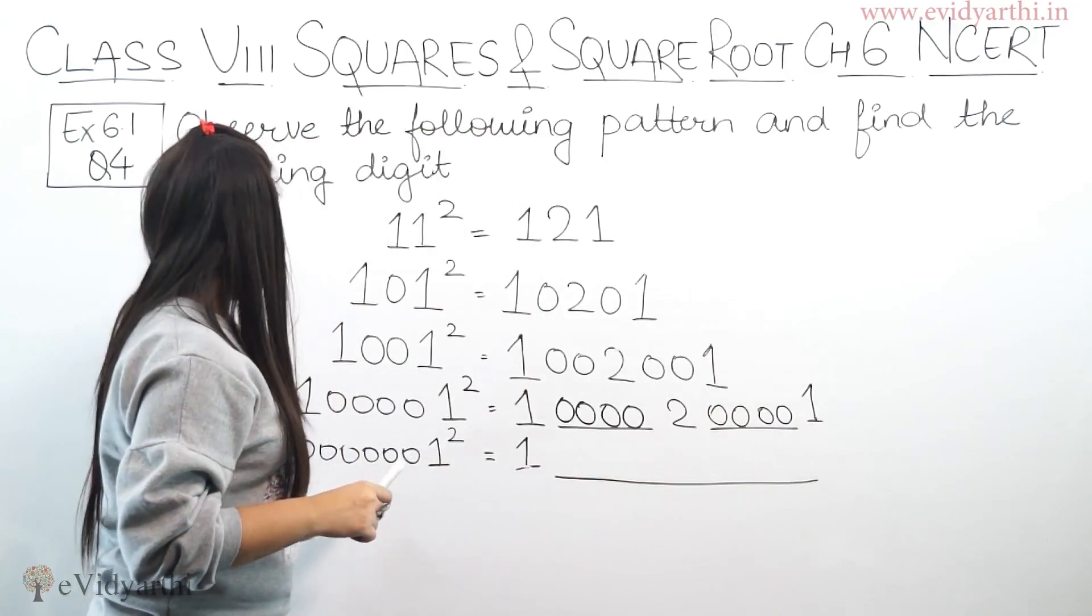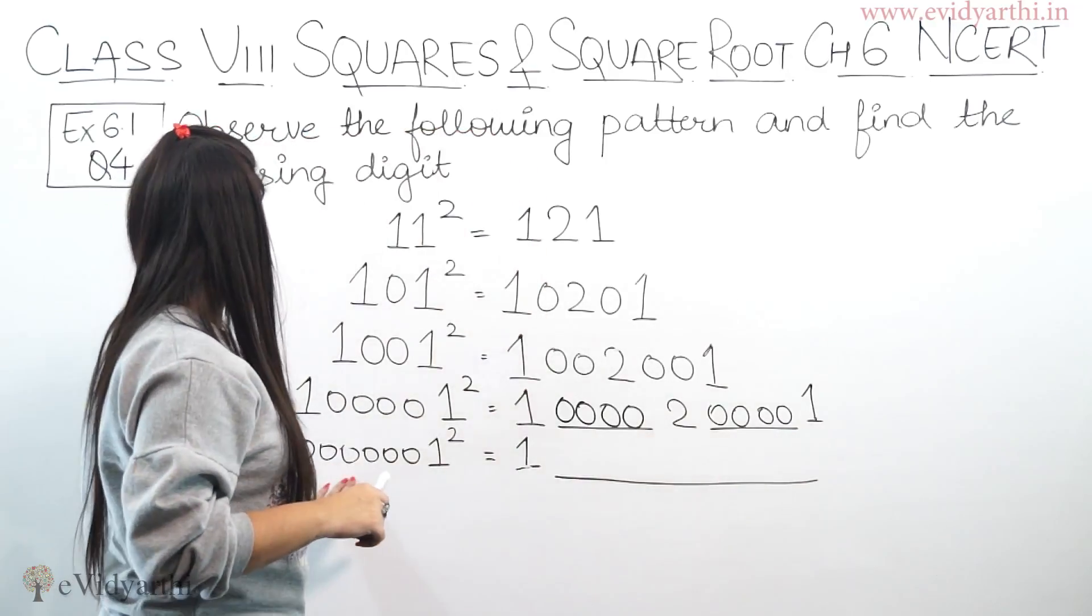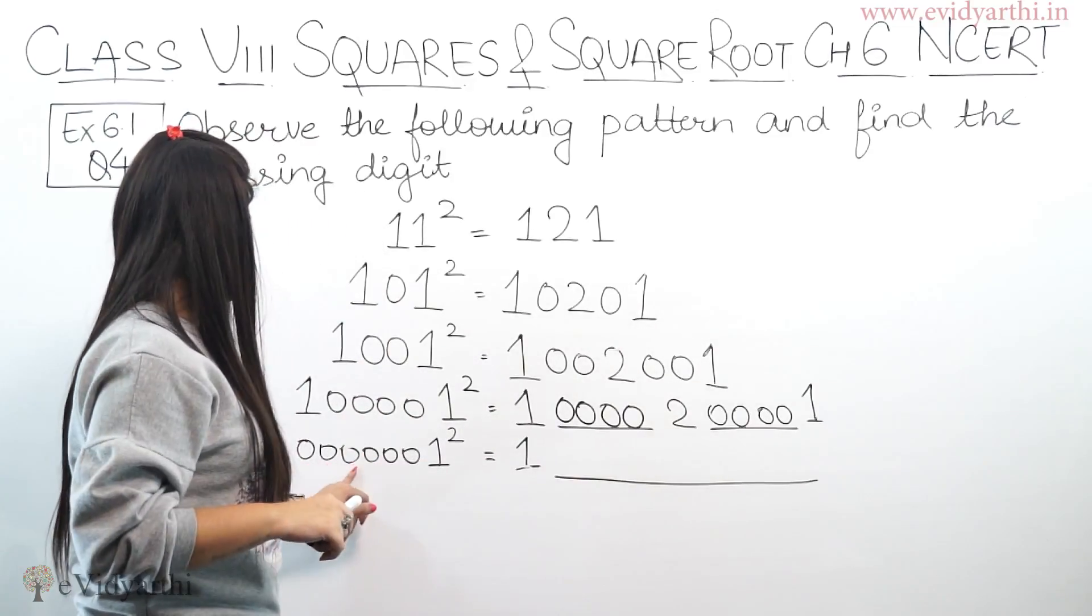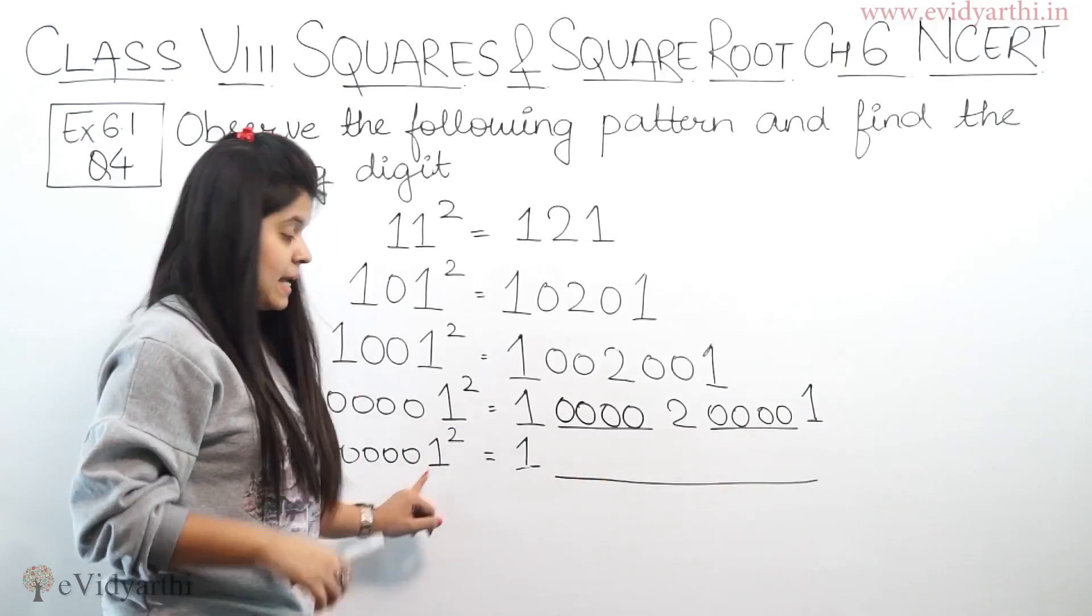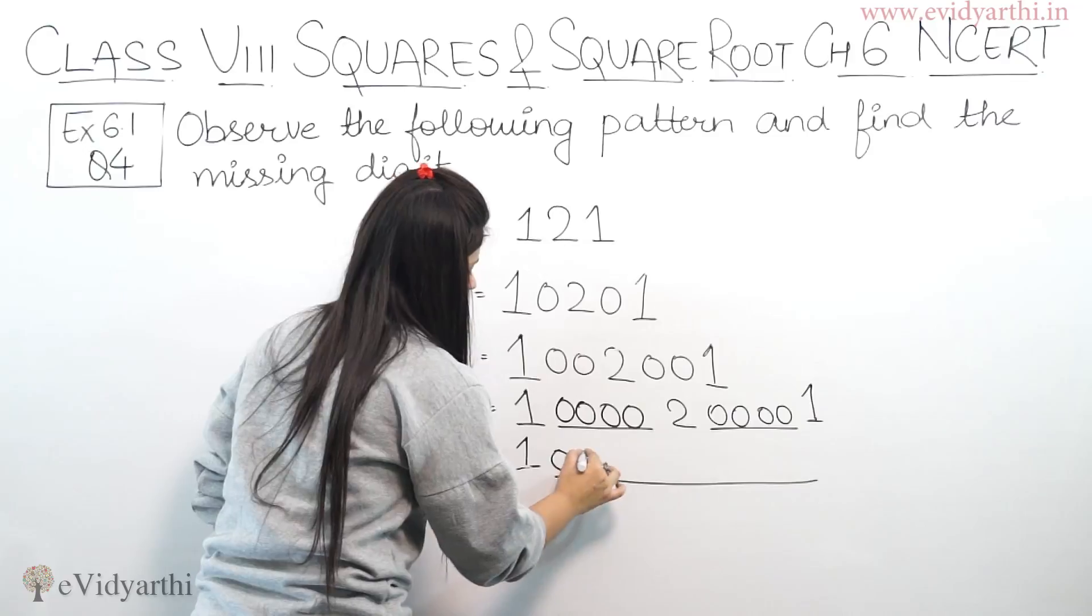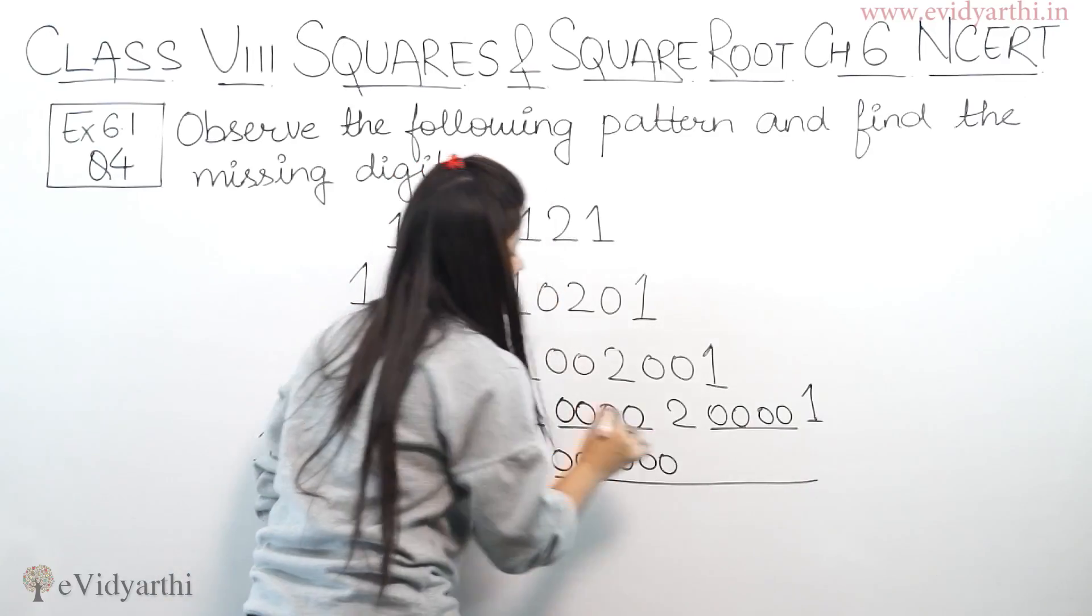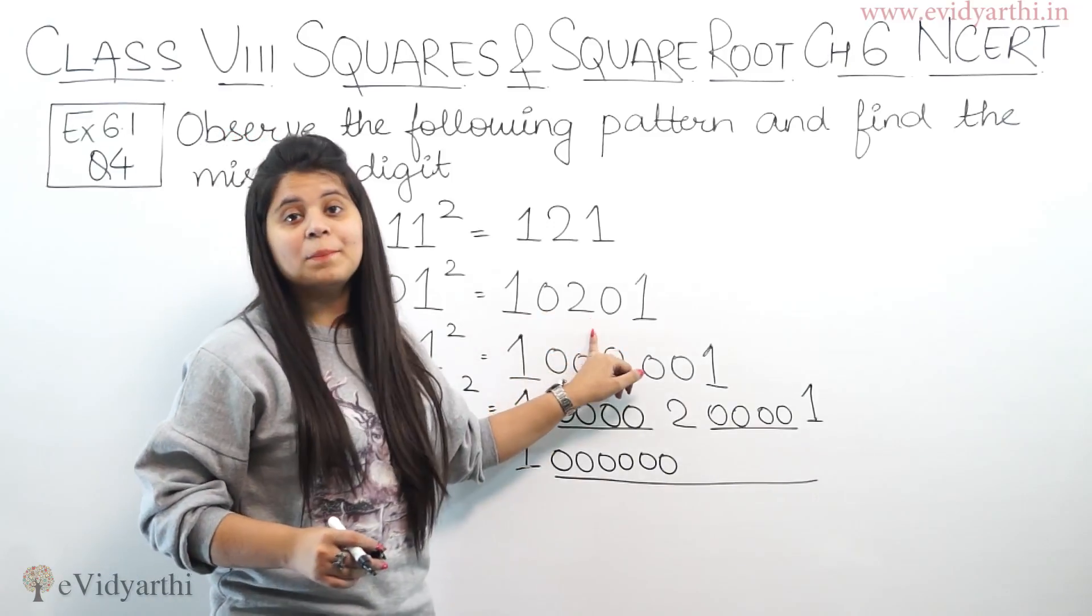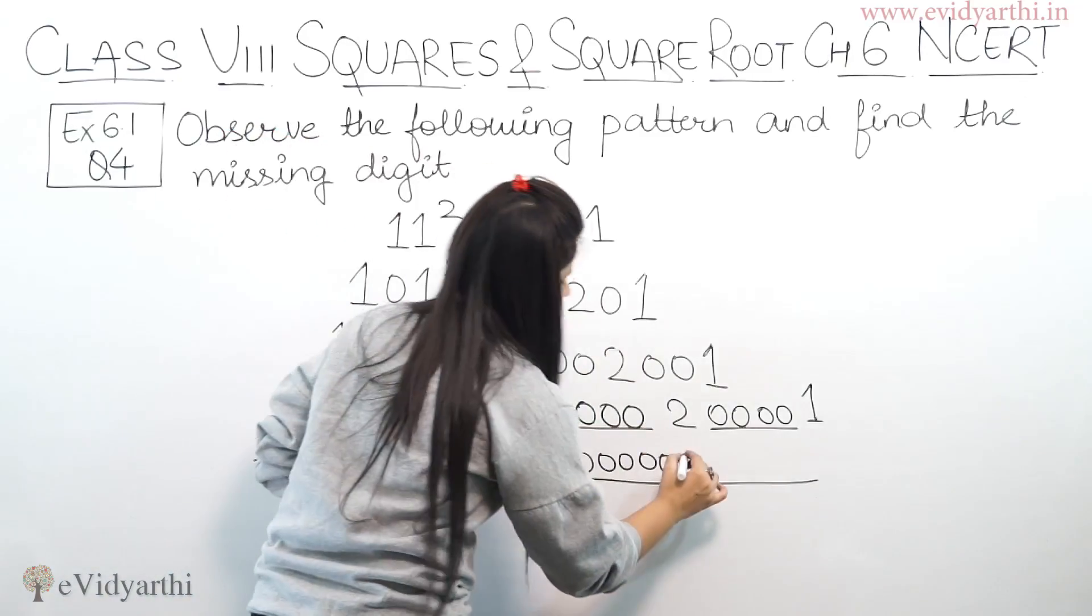Next है 100001 square. So 0s कितनी हैं यहाँ पर? 1, 2, 3, 4, 5, 6. मतलब 1 के बाद 6 zeros आएंगी. So 1, 2, 3, 4, 5, 6. अब जितनी 0s होती हैं वो 0s आने के बाद क्या आता है? Number 2.